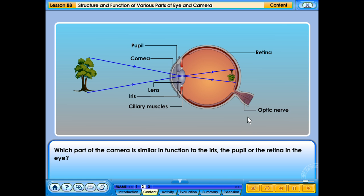Which part of the camera is similar in function to the iris, the pupil or the retina in the eye? Click the answer button to find out.